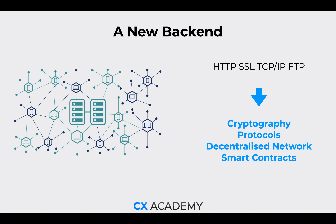There will be a new back-end for the Internet. Currently we have things like HTTP, SSL, TCP, IP, and FTP — different ways to code the Internet and allow data to be transferred. These are going to be replaced with the blockchain, cryptography, protocols, decentralized networks, and smart contracts. We're going to find out why smart contracts are so important.